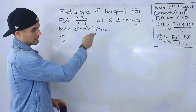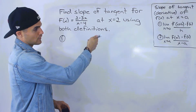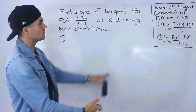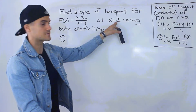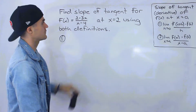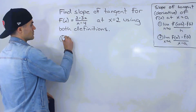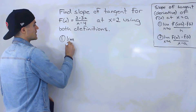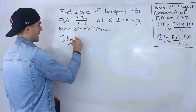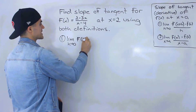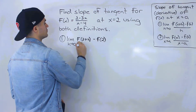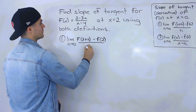So the first definition: we have the limit as h approaches 0 of f(a + h) minus f(a), all over h. The a value we're working with is the x value of 2. So if we rewrite that first definition with a equals 2, we'll have f(2 + h) minus f(2), all over h.